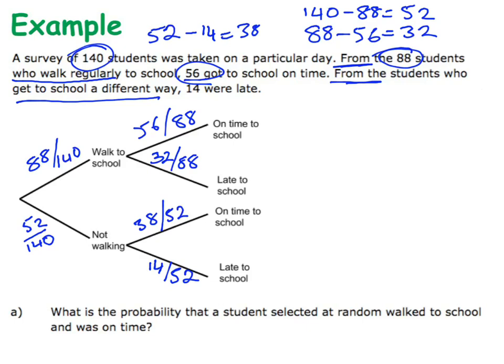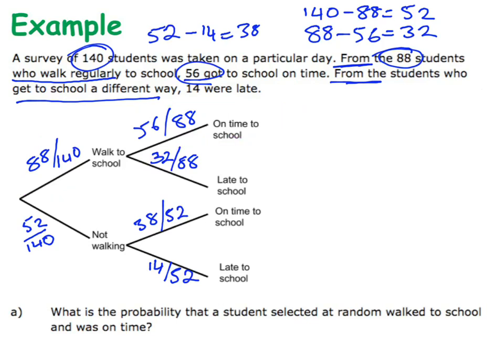Now I want to finish setting up the diagram by looking at all the combinations. One combination is being on time and walking to school — probability of walking and being on time. In probability, 'and' means multiply. So I do 88 out of 140 times 56 out of 88, and putting that into my calculator gives me a probability of 2 out of 5.